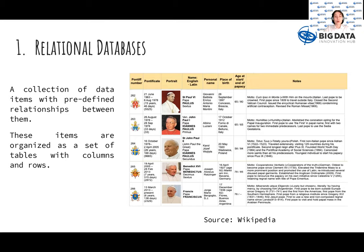First, let us learn more about relational databases, which is a collection of data items with predefined relationships between them. Those items are organized as a set of tables with columns and rows. We can see an example table from Wikipedia. The table holds information about objects. Each column in the table holds a certain kind of data, and a field stores the actual value of an attribute.